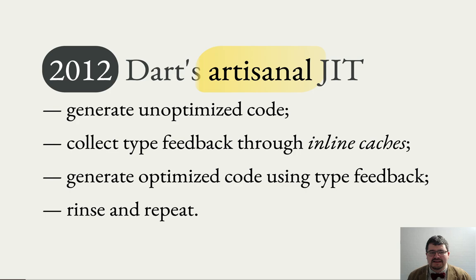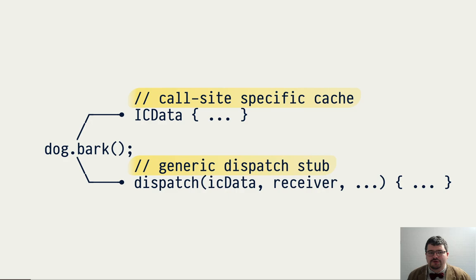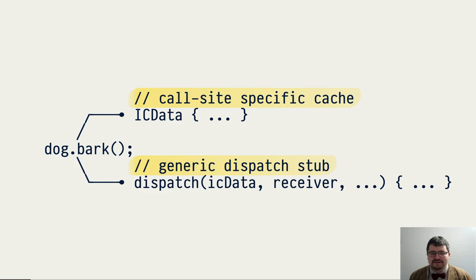I won't discuss the details of how the JIT is structured inside, but I would like to talk about inline caching. The way it works in Dart VM is that each call site has two bits of information associated with it. One is an object that accumulates information about the dynamic behavior of the call site — a call-site-specific cache that records what receiver classes were observed and caches the results of method resolution on those classes.